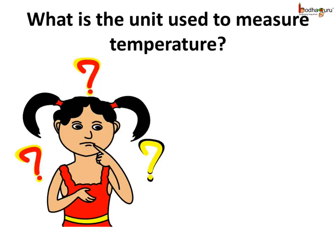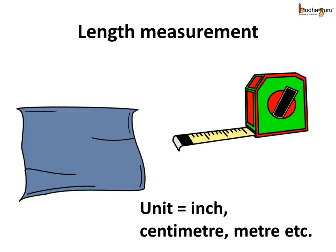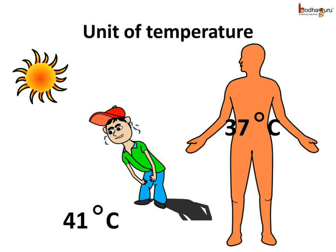The thermometer is used to measure temperature. What is the unit of temperature? Just like we have different units to measure the length, such as inch, centimeter, meter, etc., we have different units to measure the temperature. One of the units of temperature is degree Celsius. For example, the temperature on a summer noon was 41 degree Celsius. The normal temperature of a human body is 37 degree Celsius.